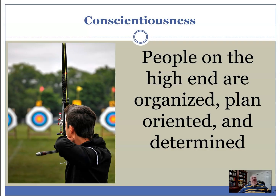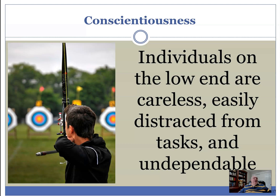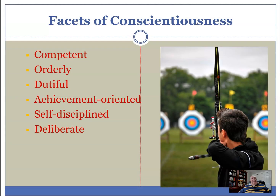The last of the five traits is conscientiousness. Individuals high on conscientiousness are organized, plan-oriented, and determined. Individuals on the low end are careless, easily distracted from tasks, and basically undependable. Conscientiousness has also been referred to by some as 'will to achieve' or 'will to work' — a definition I like that comes from Digman's work. The facets of conscientiousness are competence, orderliness, dutifulness, achievement-orientation, self-discipline, and deliberateness.